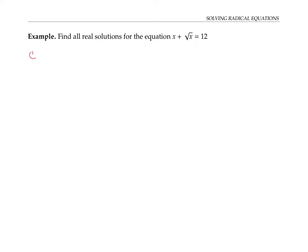When I see an equation with a square root in it, I really want to get rid of the square root. But it'll be easiest to get rid of the square root if I first isolate it — get the term with the square root on one side of the equation by itself and everything else on the other side.